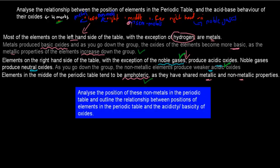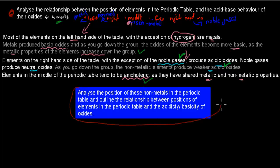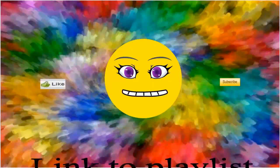This question comes from the dot point analyzing the relationship between the position of elements in the periodic table and the acid-base behavior of their oxides. This whole dot point is essentially what we were asked in the question itself. I hope that was useful — thank you for watching.